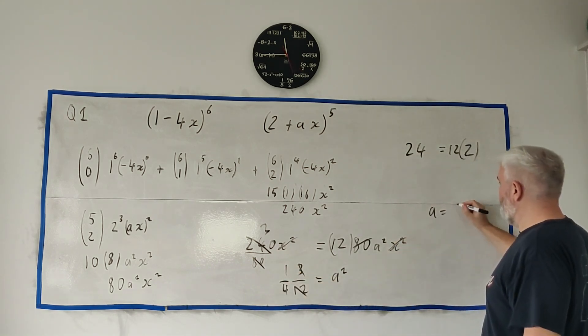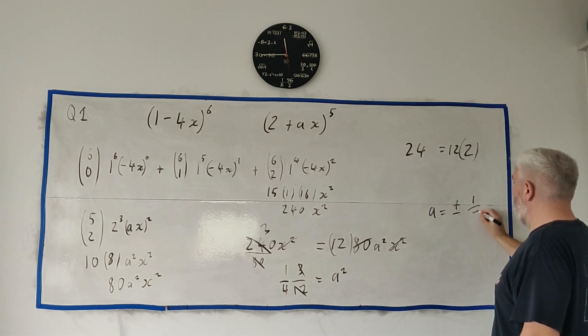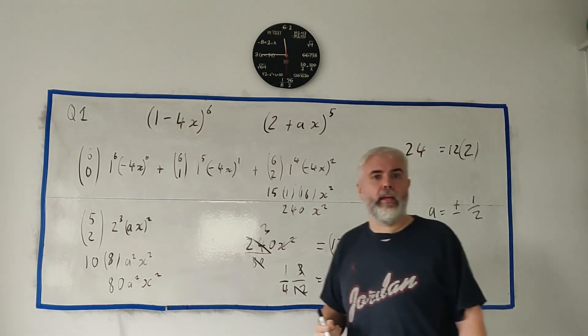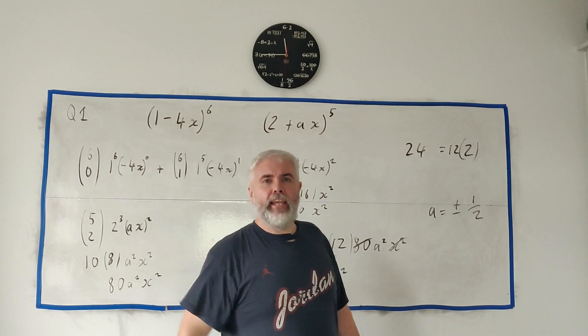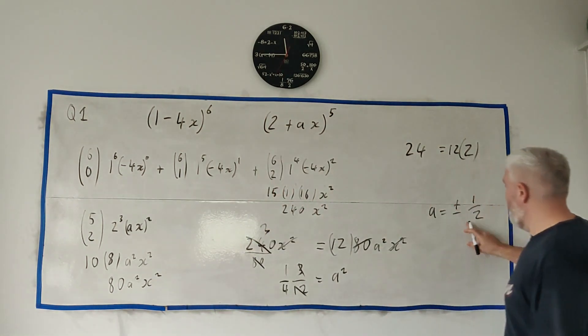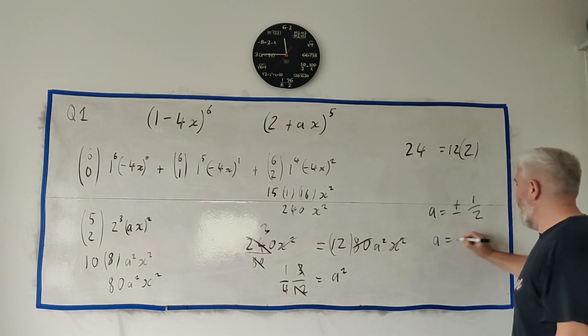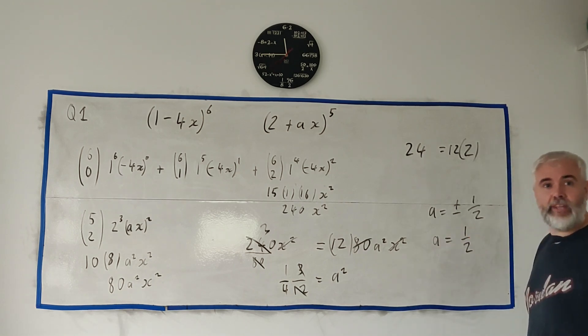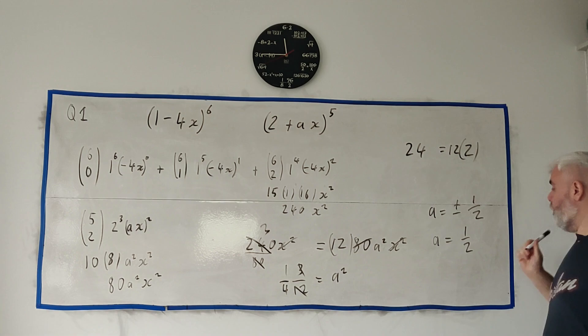So that means a is equal to plus or minus a half. But we have to be careful, because you will lose a mark for that. They tell you in the question, a is a positive constant. So then you have to, one more line, a is equal to a half. And that's the full marks for part 1.